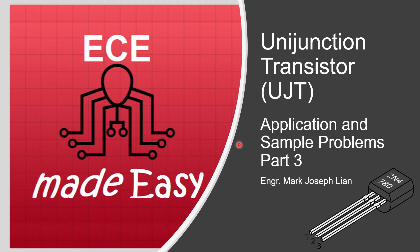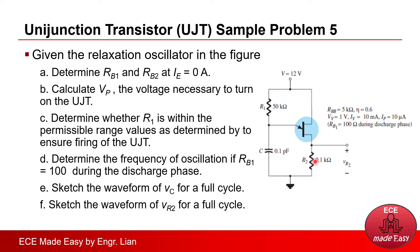Hi everyone. I'll be discussing Part 3 of the UJT application and sample problems. This is actually only one problem, but there are a lot of values to be determined. Given the relaxation oscillator in this figure and the other given values, we must determine the following. Let's go through each one by one.